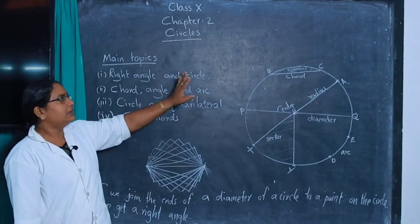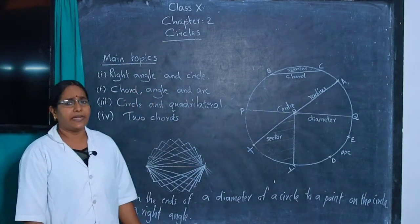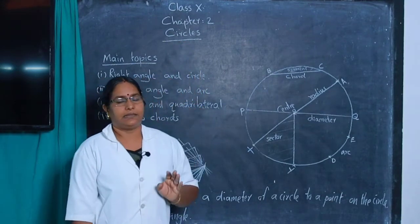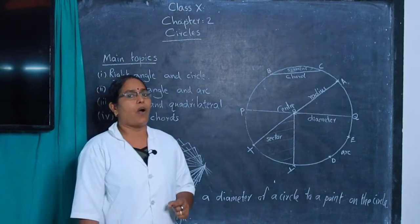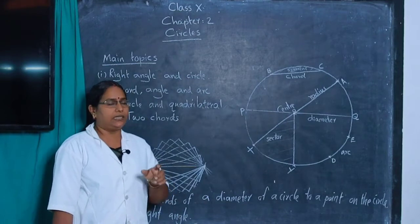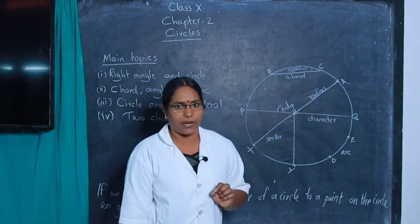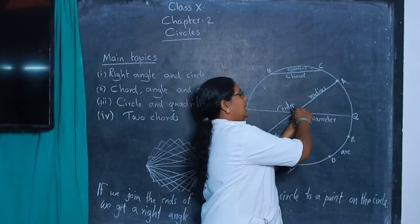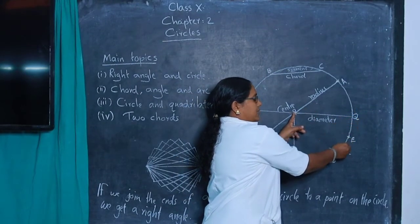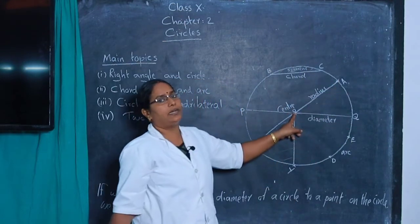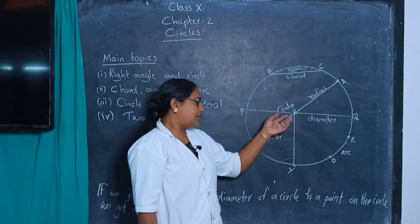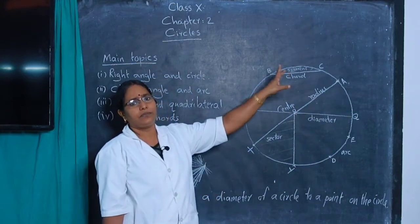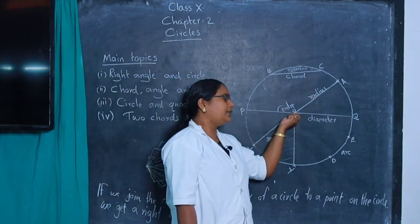First, I check your previous knowledge about circles. What is a circle? A circle means a set of points equidistant from a fixed point. This fixed point is called the center. From the fixed point, an infinite number of equidistant points form a set called a circle. The definition: a set of points equidistant from a fixed point is called a circle.